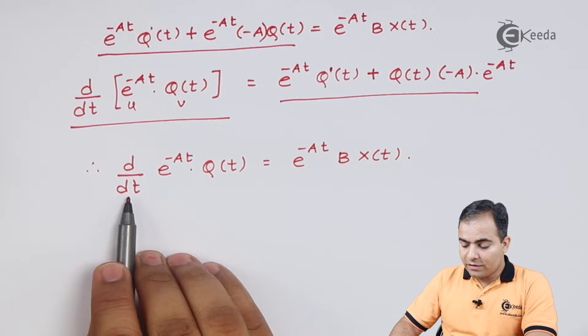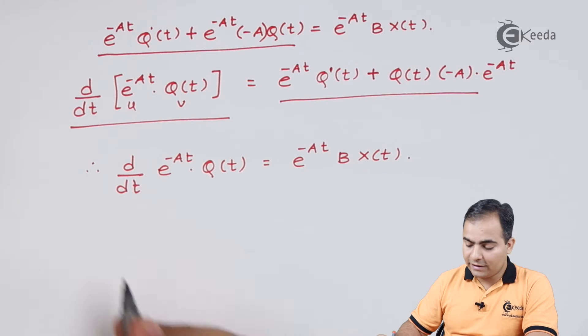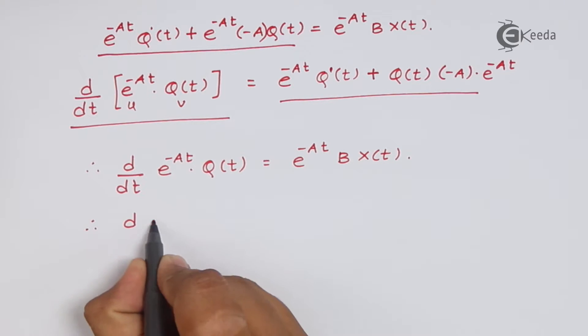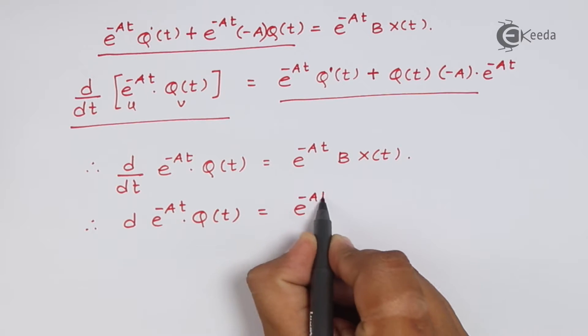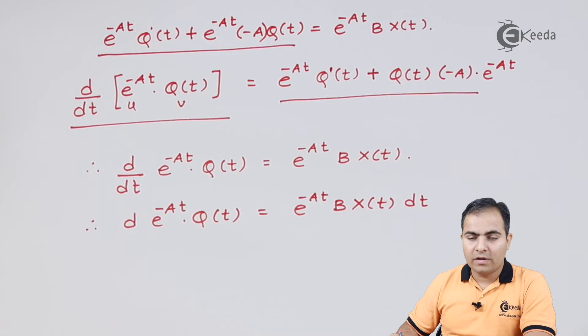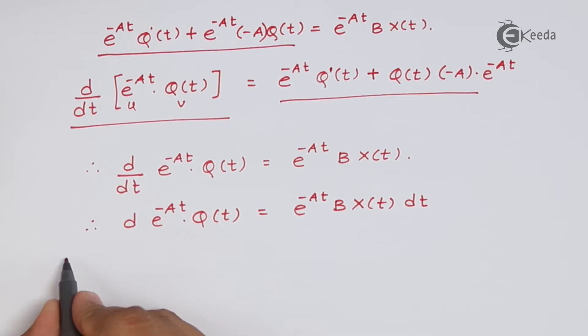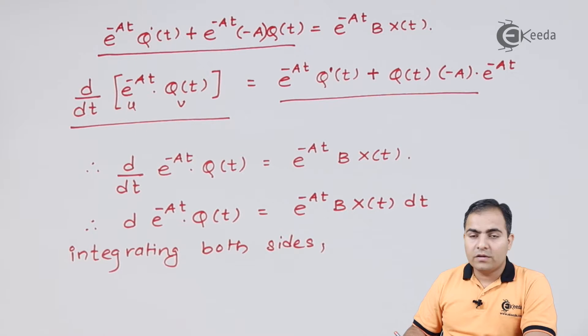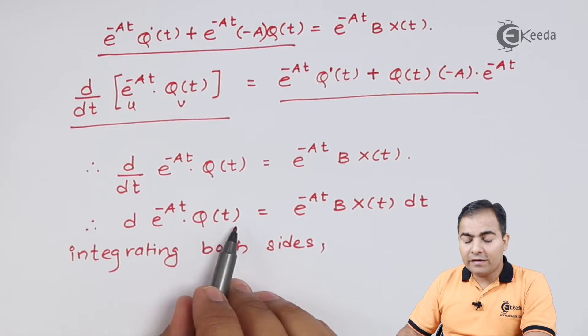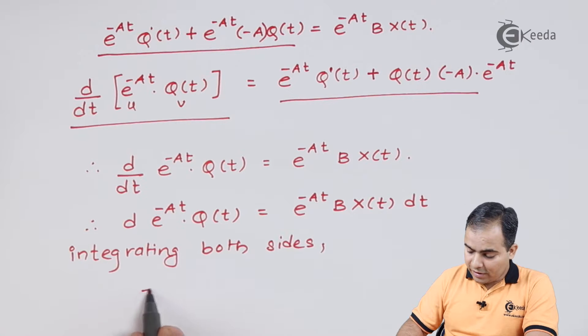Now I am going to do one thing. I will shift this d/dt or simply this dt on right hand side. Now integrate both the sides with respect to dt. After integrating both sides, here we don't have any dt, so we cannot apply differentiation here.